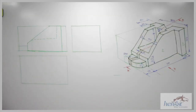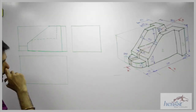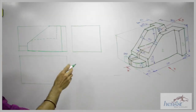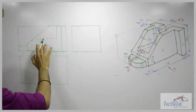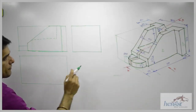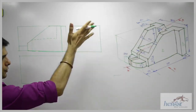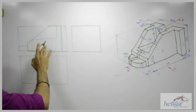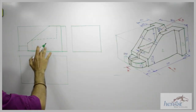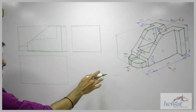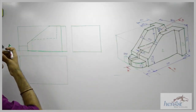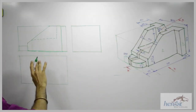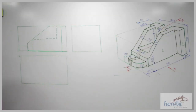Now we need to draw dark. One important thing — the reason I am drawing light is because it is a sectional front view. When we cut, a lot of the portion will get erased. So initially when you draw any sectional view in orthographic, first you draw light and then you draw it dark.